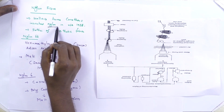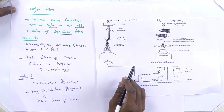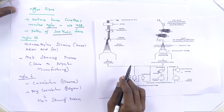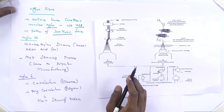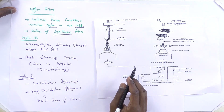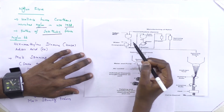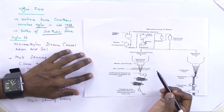Next is nylon fiber production. The Wallace Carothers brothers invented nylon in the year 1938. Nylon is called the father of synthetic fibers. There are two types of nylon: nylon 6 and nylon 6,6. Nylon 6 is produced from caprolactam, with the polymer being polycaprolactam. For nylon 6,6, the monomers are hexamethylenediamine and adipic acid. The same melt spinning method is applied to produce nylon filament yarn.